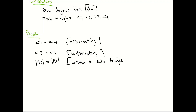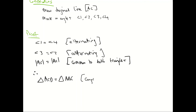So there we have proved that triangle ACD is congruent to triangle ABC. That's the logic for doing all that work — to prove that they were congruent. And it's angle, side, angle — so they're congruent because of ASA.